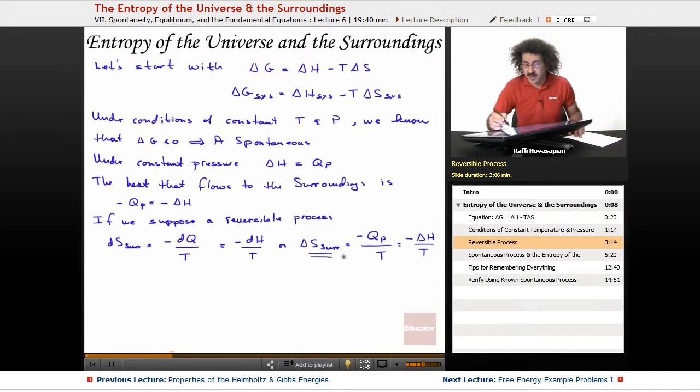So if I want to know what the change in entropy of the surroundings is, not the change in entropy of the system, I just take the delta H of the system, take the negative sign of it, and divide by the temperature at which this process is taking place. That's all this is.